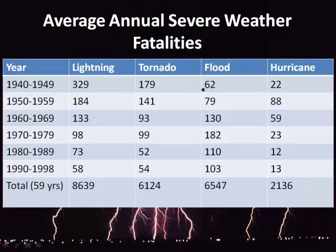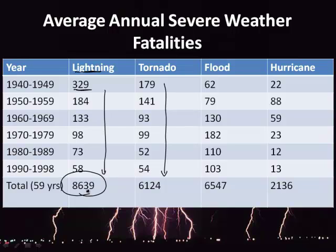Looking at a chart of fatalities from severe weather, lightning causes a significant number of deaths. On average between 1940 and 1949, about 329 people per year died from lightning, though that number has dropped as awareness has improved. Importantly, more people have died from lightning than from tornadoes, floods, or hurricanes combined over the period from 1940 to 1998. Lightning is a major issue, especially here in Colorado, and even in our own community we have lost people to it.